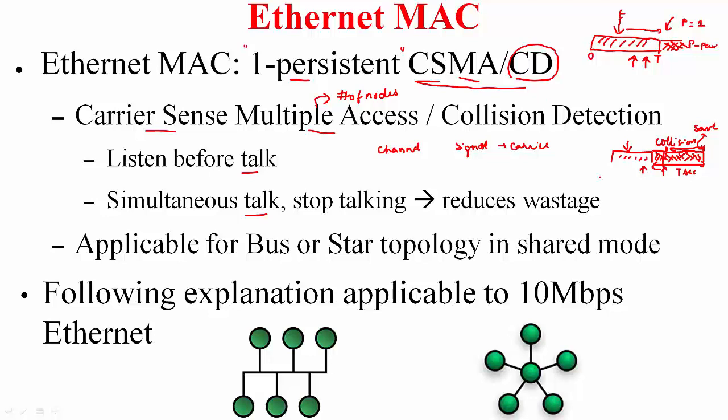Now that we understand these terms - one persistent is the right to transmit as soon as current transmission ends, carrier sensing is listening before talking, and collision detection is about detecting collision at the earliest to avoid wastage - the CSMA/CD MAC is applicable for bus topology and star topology only in shared mode, that is this link is a half duplex link. Current Ethernet uses star topology but it is full duplex, so CSMA/CD does not come into play.